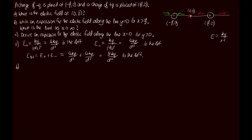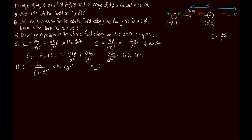For part b, consider a point out along the axis and call its distance from the origin x. E_plus, the electric field at this point due to the positive charge, has the distance (x − d/2), so E_plus = kq/(x − d/2)², directed to the right. For E_minus, the distance from the negative charge to this point is (x + d/2), so E_minus = kq/(x + d/2)², directed to the left.